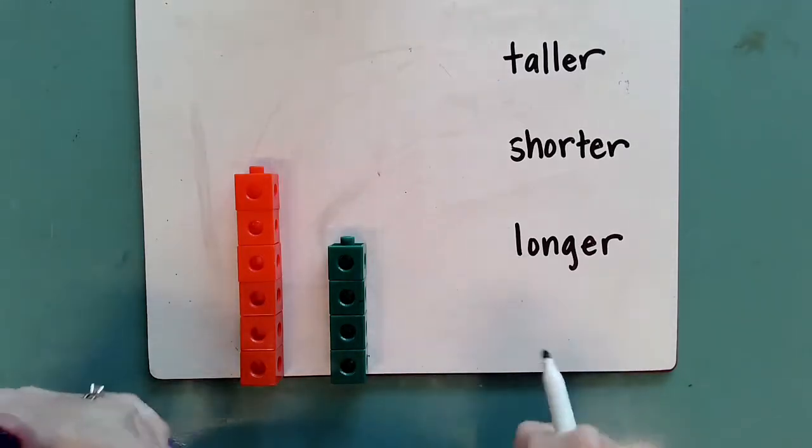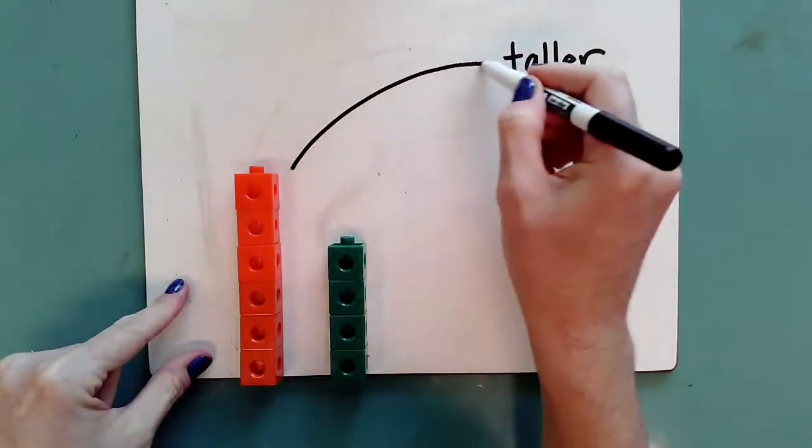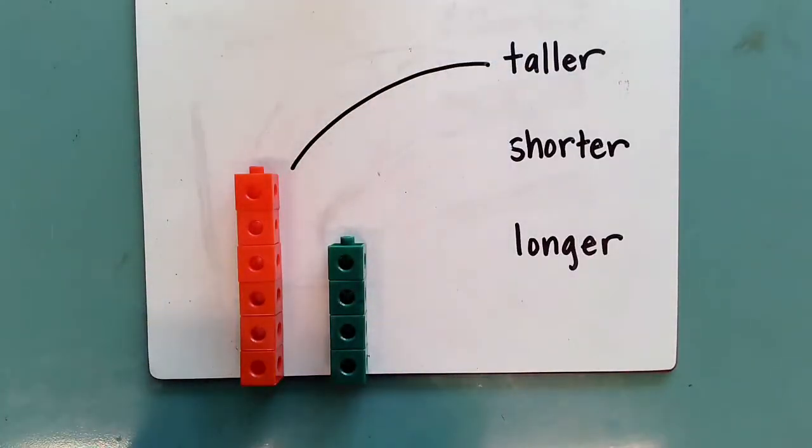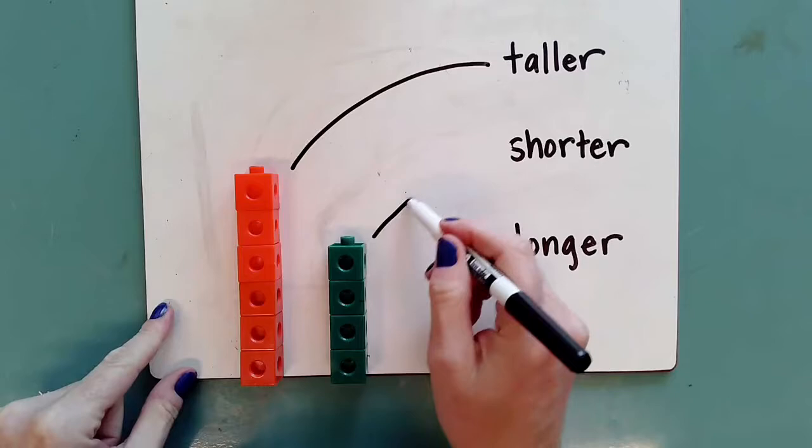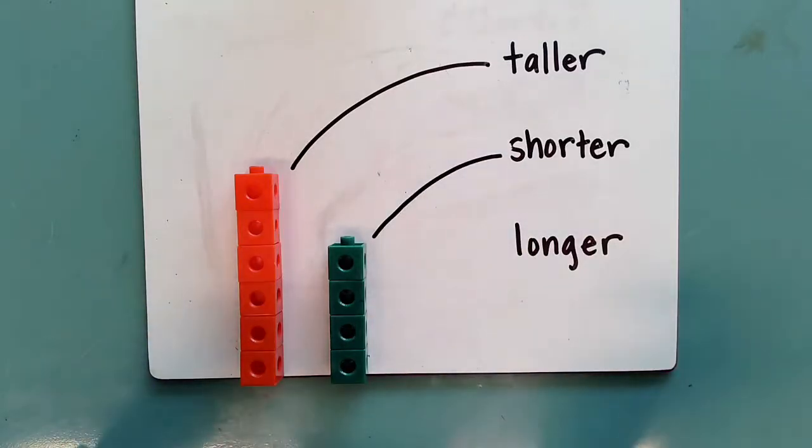So if I have them lined up, it looks like the orange tower is taller than the green tower. And then my green tower would be shorter than my orange tower.